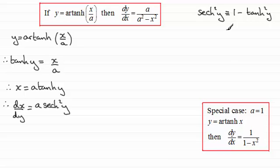So this is fairly straightforward. We know that tanh y is x over a, so if we square that, we're going to have 1 minus x squared over a squared. And we can put this all over a common denominator of a squared, and get a squared minus x squared.